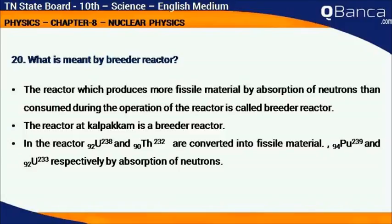The reactor at Kalpakam is a breeder reactor. In the reactor, 92U238 and 90TH232 are converted into fissile material 94PU239 and 92U233 respectively by absorption of neutrons.